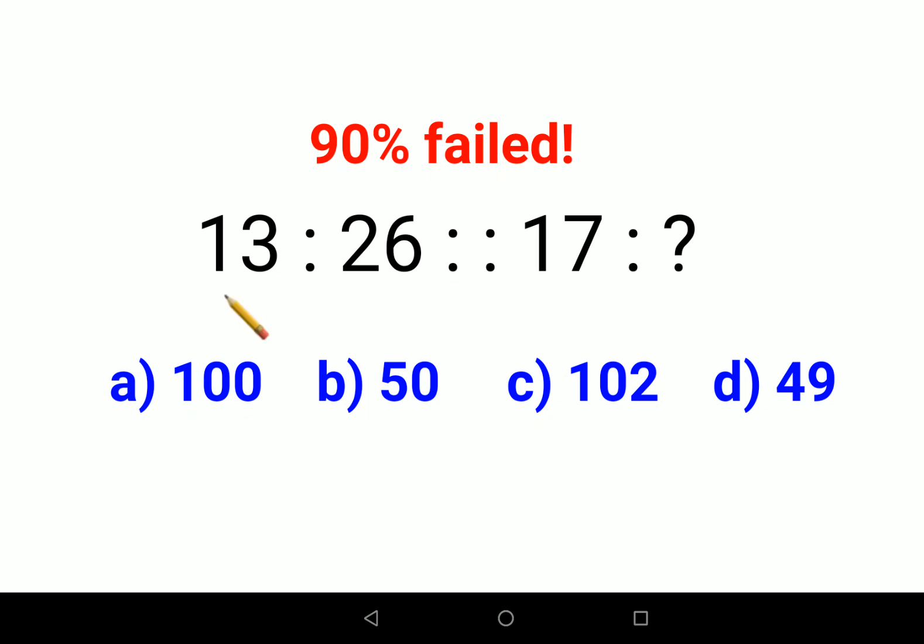And when you look at the question, you will think that this is so easy. This is just 13 into 2 that gets you 26. So this will be 17 into 2 that should be 34.